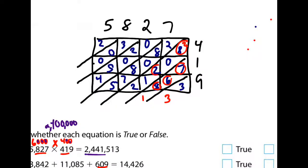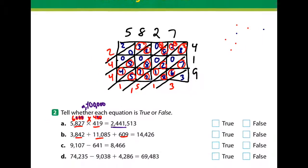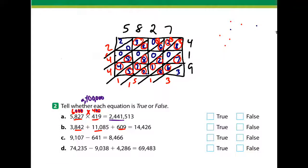Eight and two is 10... 11, 12, 13, 14, 15 — write the five, carry the one. Eight and two is 10, 11... 19, 26, 31 — write the one, carry the three. Two and three is five, and five is ten, and four is 14. Then three and three and one is four, then we have a two. So I get two million, four hundred forty-one thousand, five hundred thirteen — and that is true. That problem was a pain.